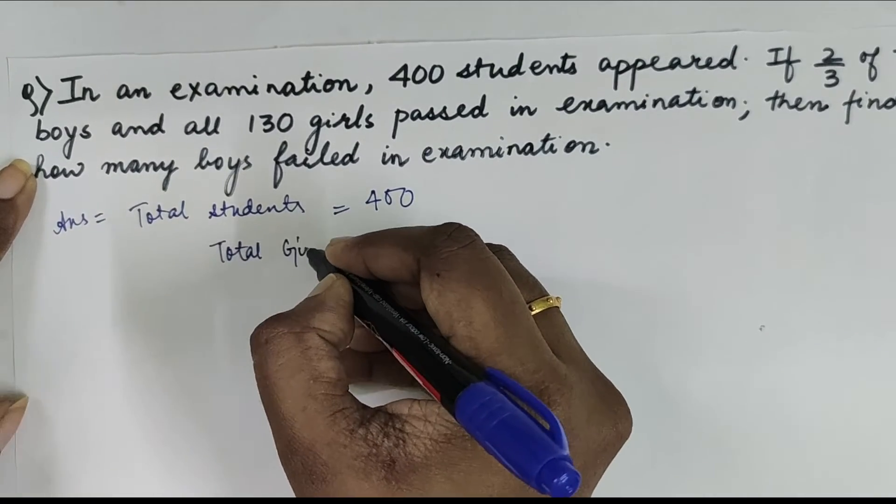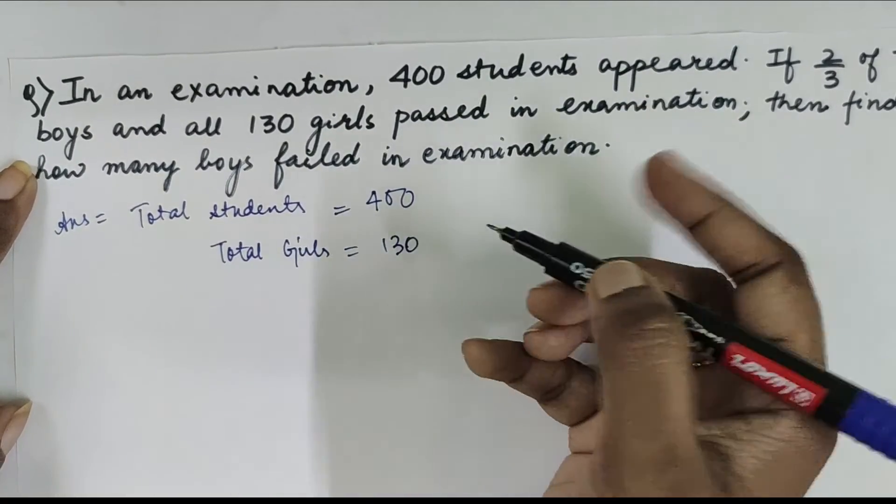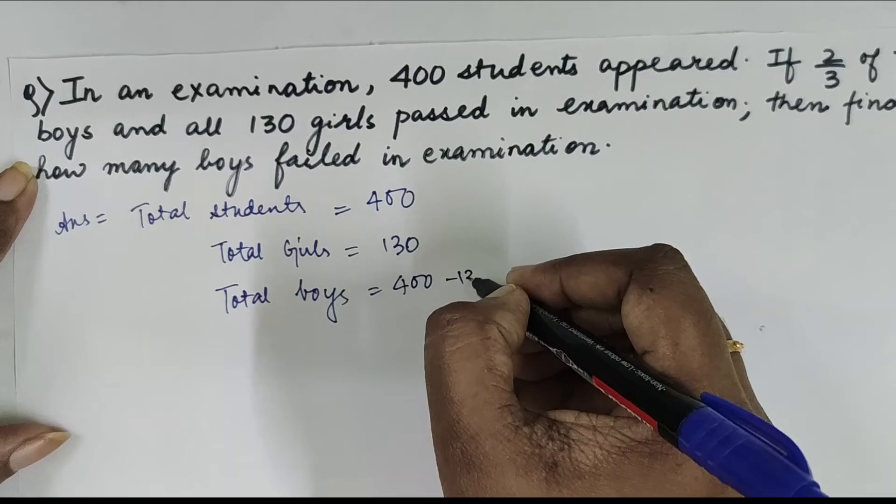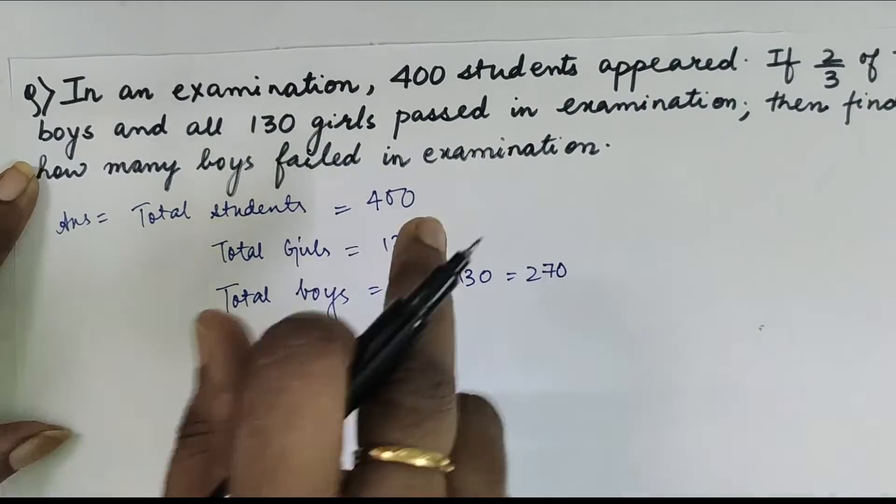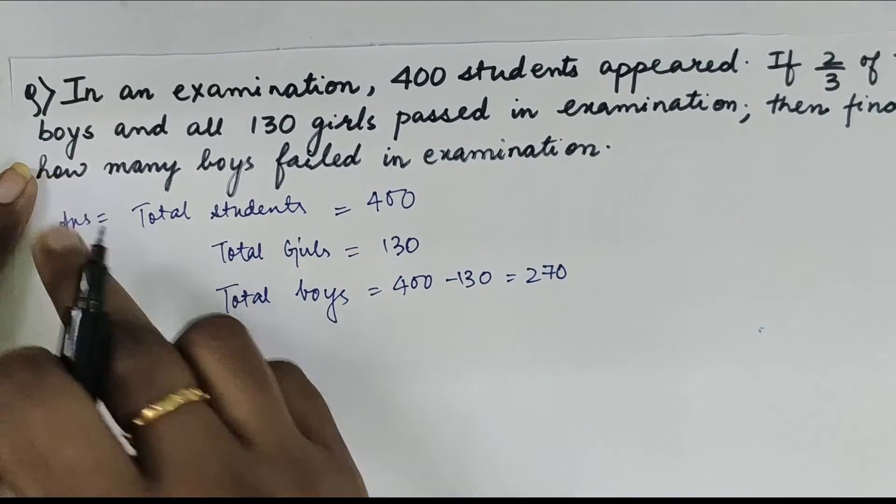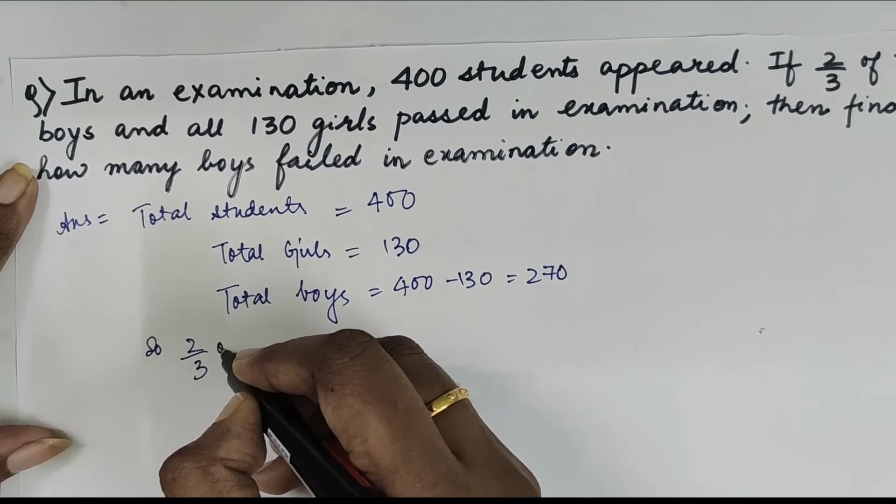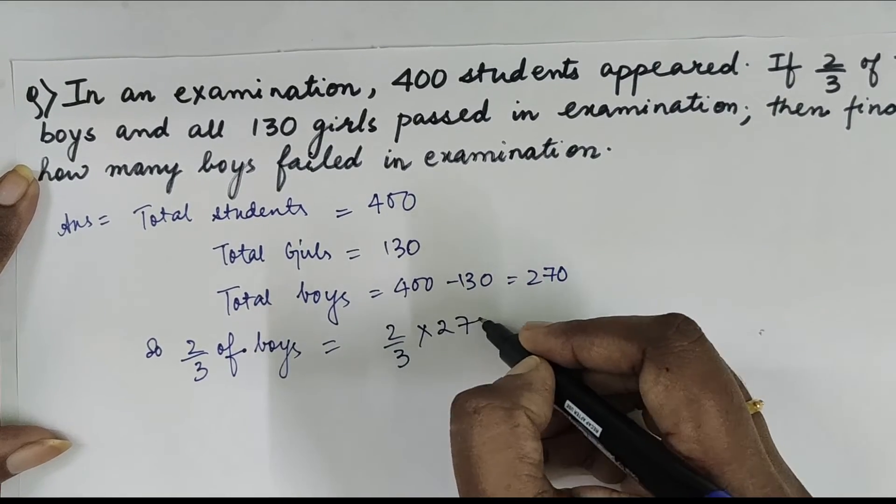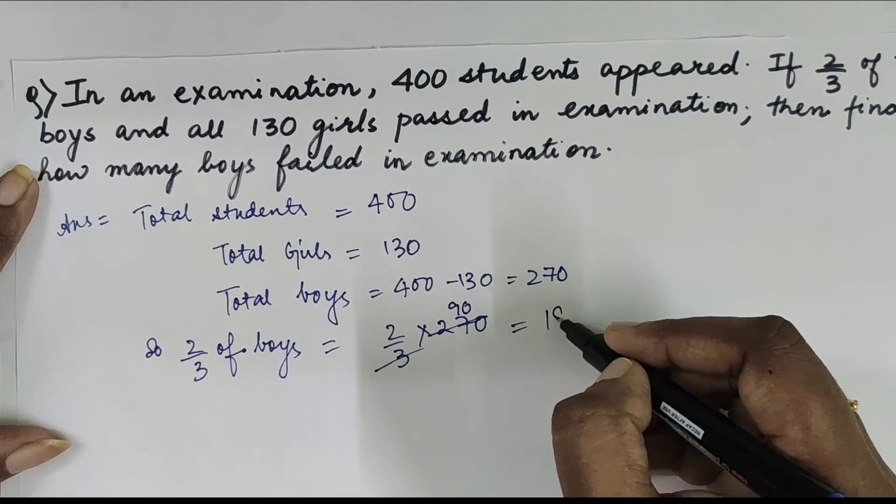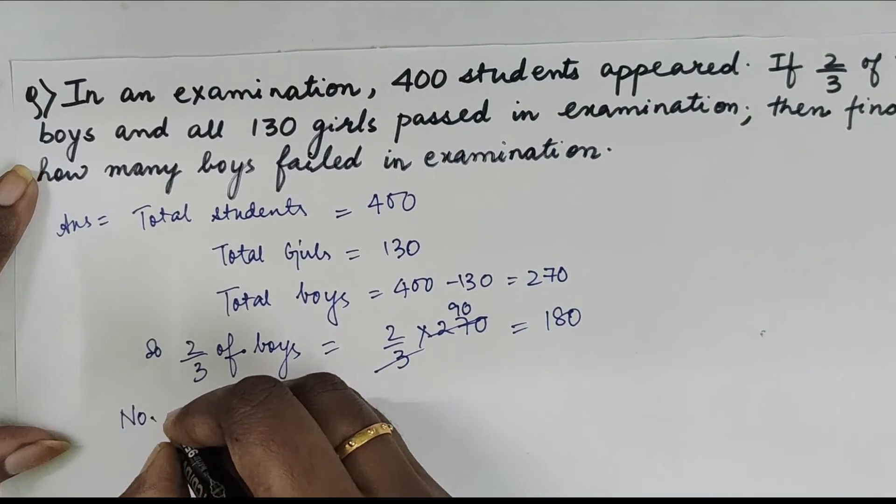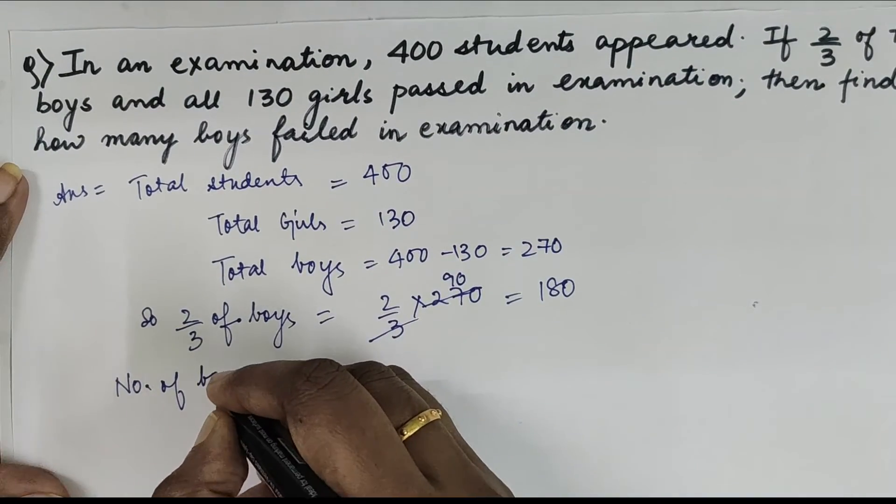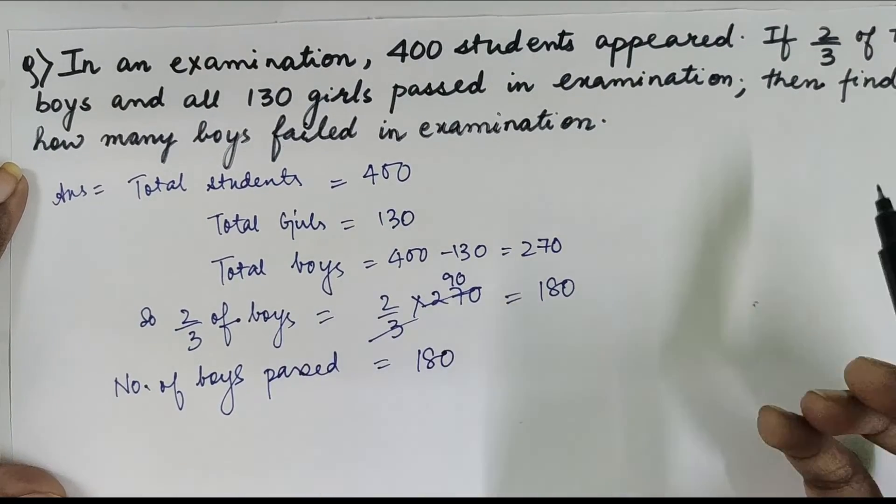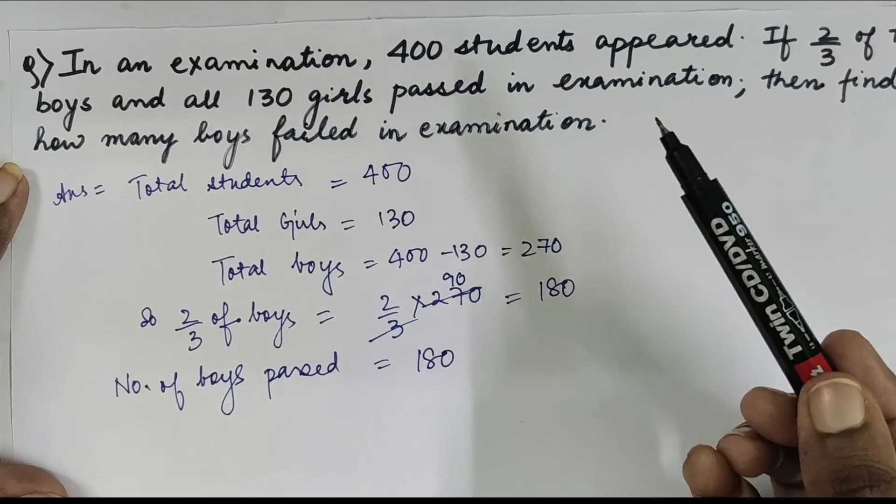Let us write that first. Total students = 400. It's written all 130 girls passed, so we know that total girls = 130. We don't know the number of boys, so we can calculate that by simple subtraction: 400 - 130 = 270. But all did not pass. 2/3 of the boys passed, so 2/3 of boys = 2/3 × 270 = 180. So number of boys passed = 180.